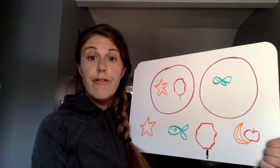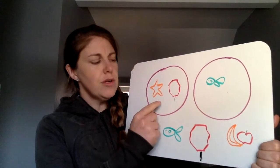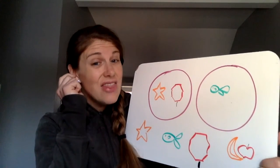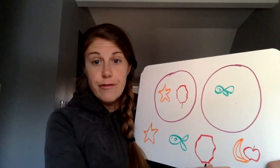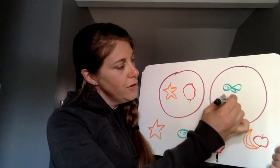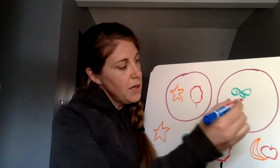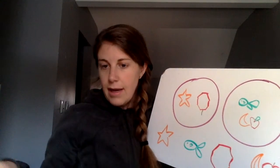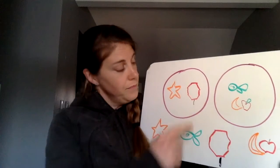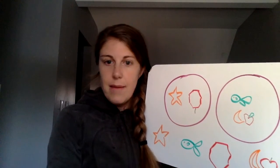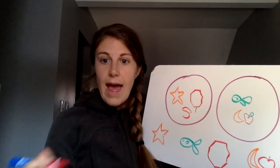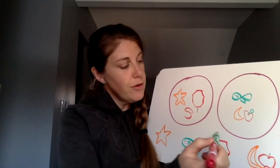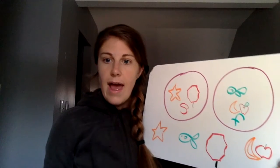Now my last picture over here is of fruit. So should fruit go with star and stop sign, or fish? I think that I hear that fish and fruit start with the same sound. So I'm going to put my fruit — my banana and my apple — in that circle. So now in this circle I have star and stop sign because they both start with an S sound, and I have fish and fruit because they start with an F sound.